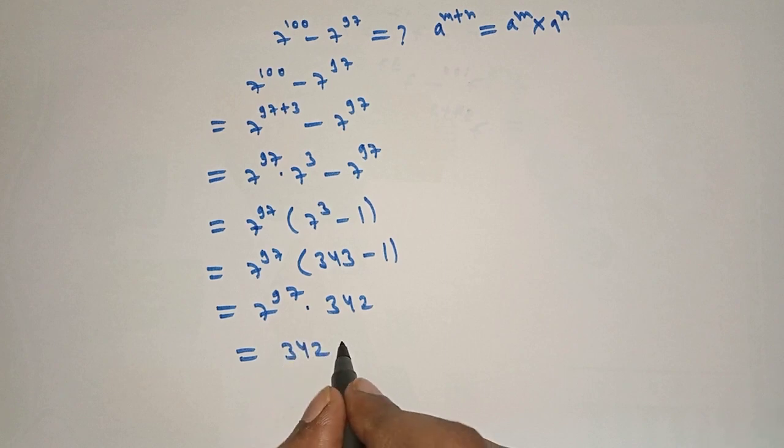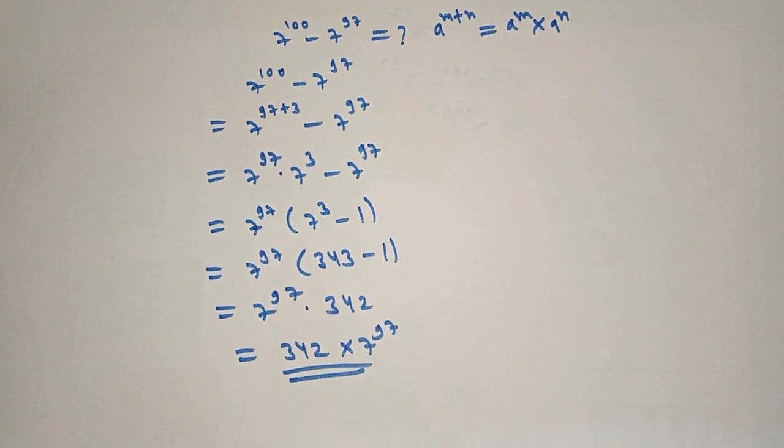Which is equal to 342 into 7 raised to 97, which is our right answer. If you liked my video, subscribe to my channel. Thank you.